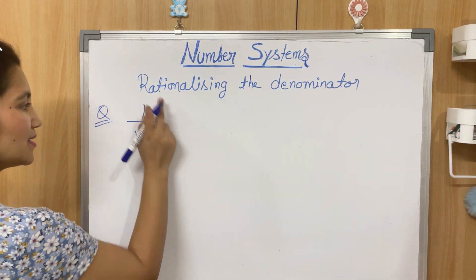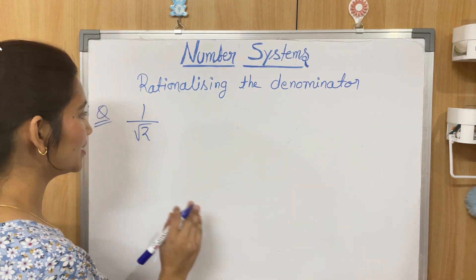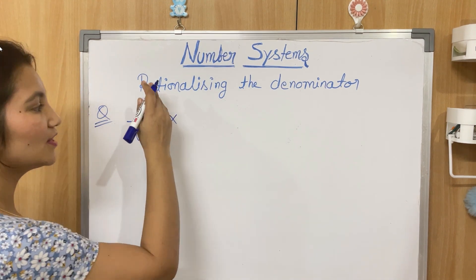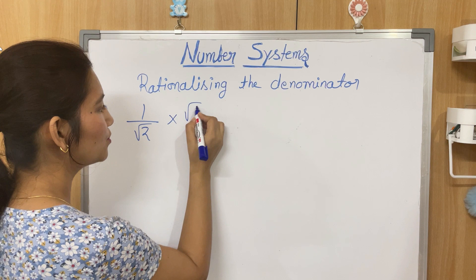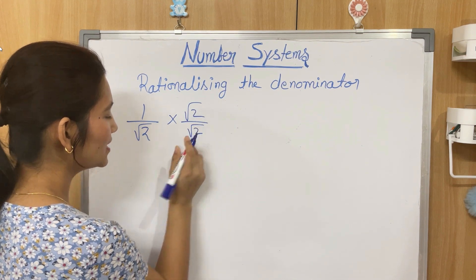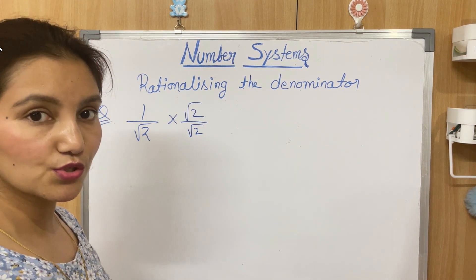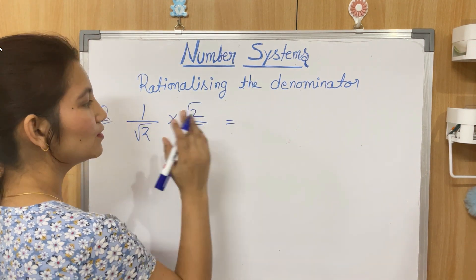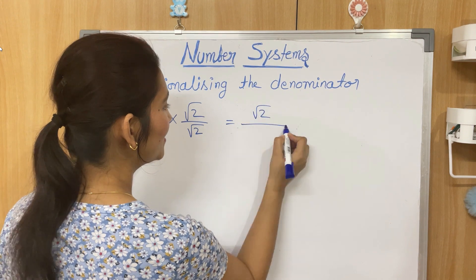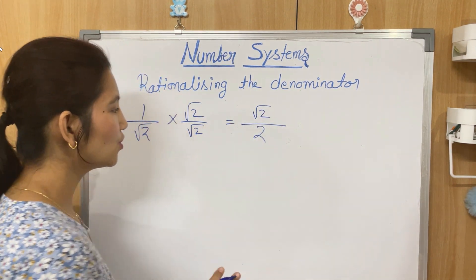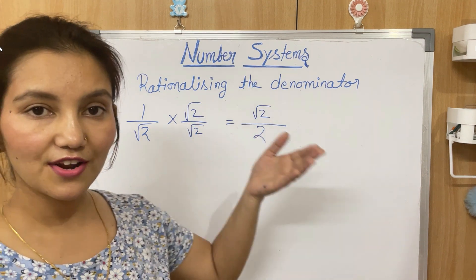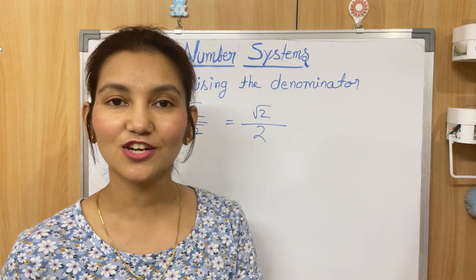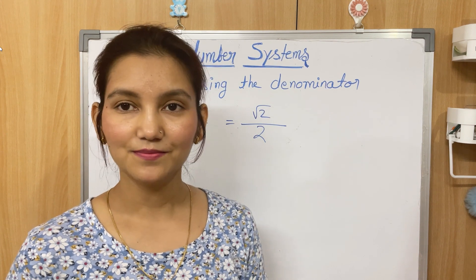If this is the simple expression 1/√2 and we have to rationalize the denominator, what we will do is multiply both the numerator and the denominator by √2, because once we multiply √2 with √2 it becomes 2. So 1 × √2 is √2 in the numerator, and √2 × √2 is 2 in the denominator. So 1/√2 rationalized gives us √2/2, and the denominator is rationalized.